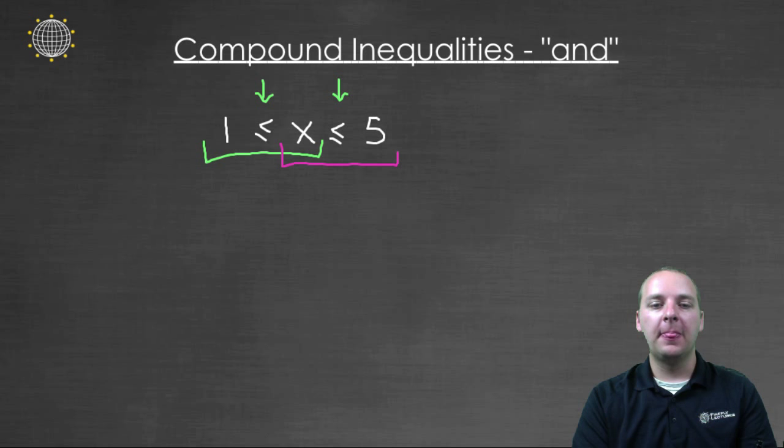For example, if you picked x = 7. Well, seven is greater than one, or you could say one is less than seven. So this one would be fine, but seven is not less than five, and so that would not be true.